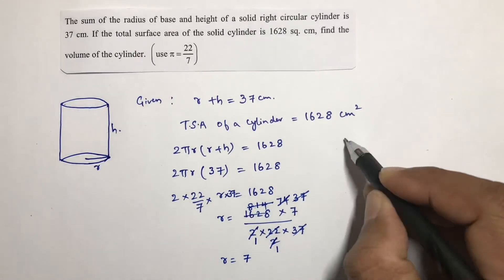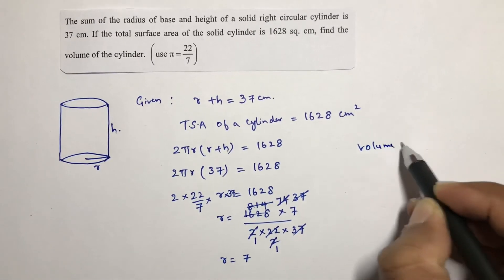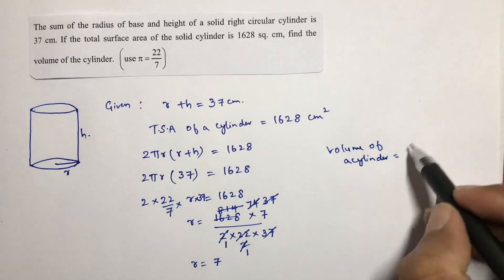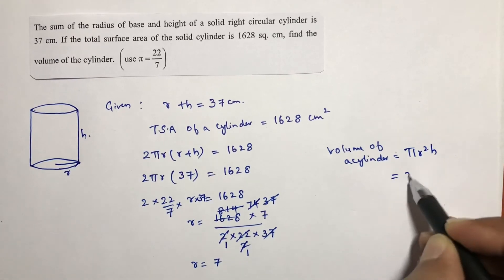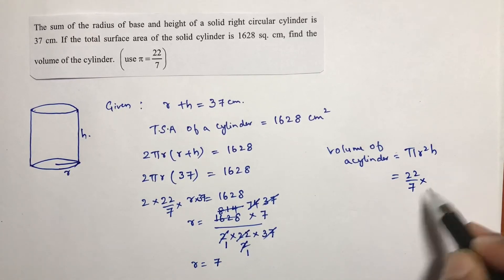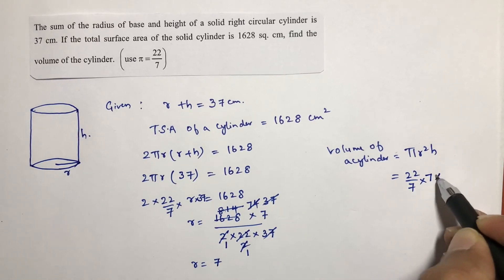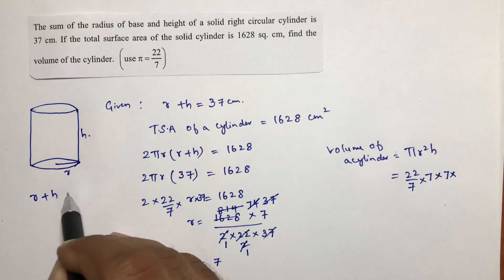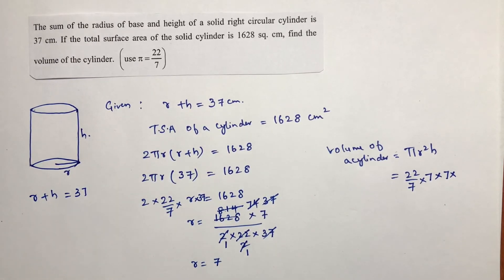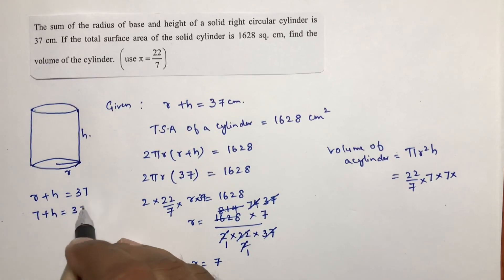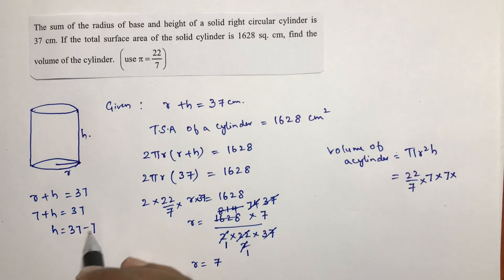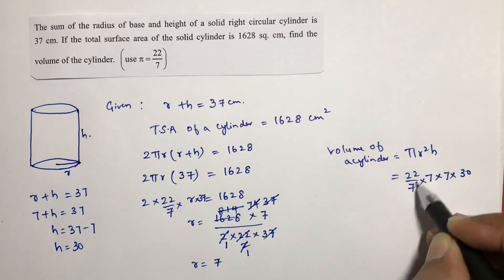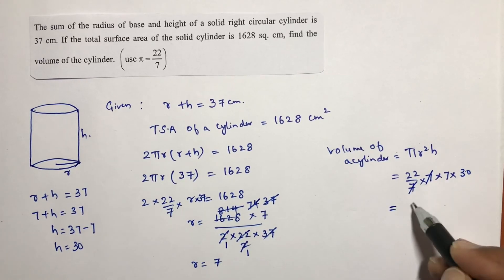They are asking for the volume of a cylinder. Volume of a cylinder is πr²h. Pi is 22/7 and radius is 7, so r squared is 49. We don't have height directly, but r plus h is 37 and r is 7, so 7 plus h equals 37, giving height equals 30.